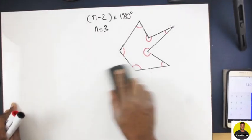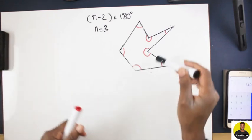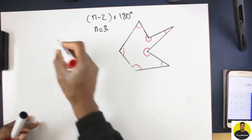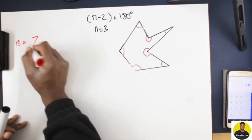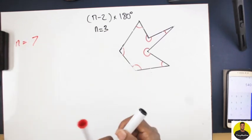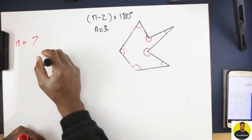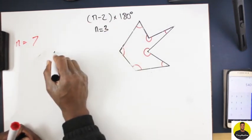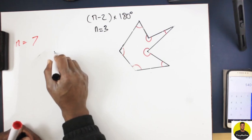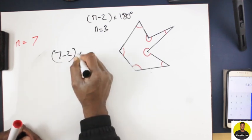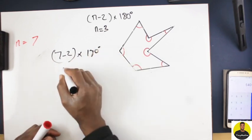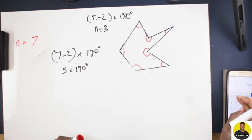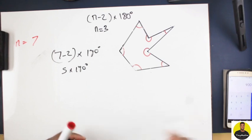Now let's go to this harder one. It's got seven sides — a seven-sided shape. If we apply n minus 2 times 180, we get 7 minus 2 times 180 degrees, which equals 5 times 180 degrees. That equals 900 degrees.